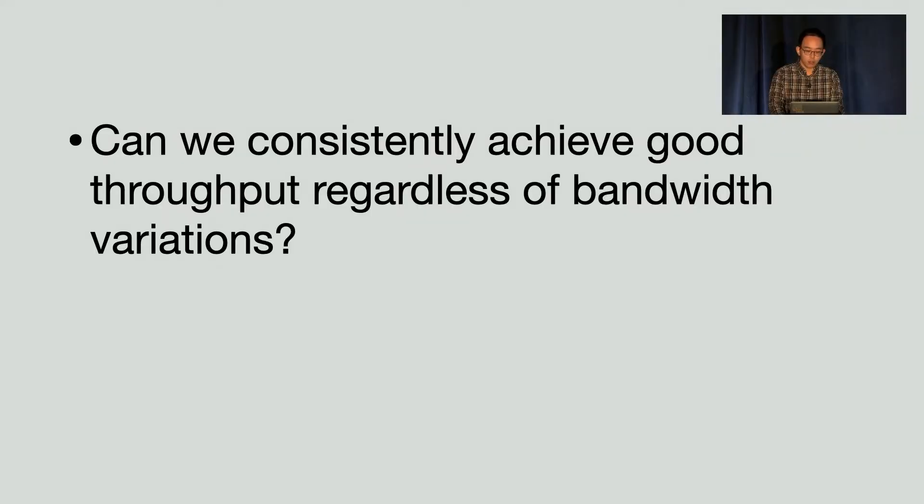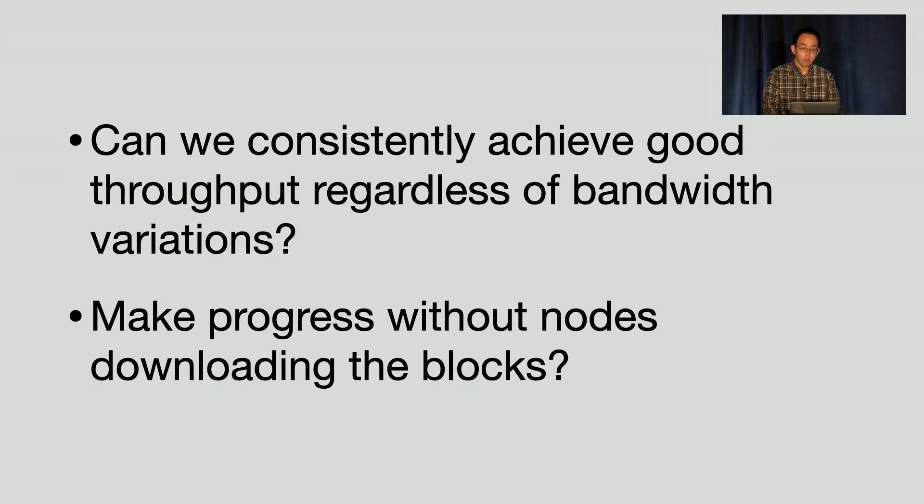Our goal is to remove such bottlenecks. Specifically, we ask: can we design a consensus protocol that achieves good throughput even under significant bandwidth variations? If we want to achieve that, we must move block download off the critical path. Otherwise, bandwidth variability will always create straggler nodes and bottleneck the system throughput. This means that the consensus protocol must allow nodes to propose new blocks without downloading existing ones.